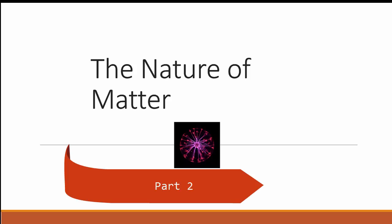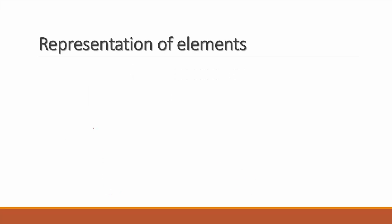Hello there. In the previous part of the chapter we saw the difference between states of matter and kinds of matter. We also saw what metals and non-metals are and their properties. Now let's go straight into the next part of the chapter, which is part 2 of states of matter.